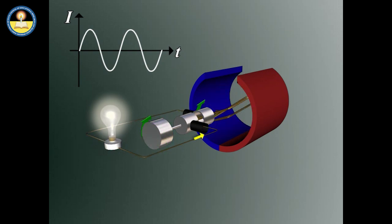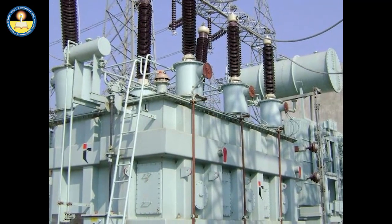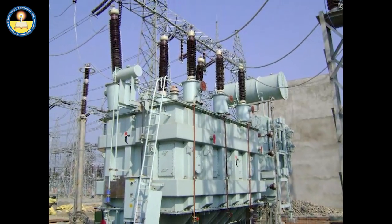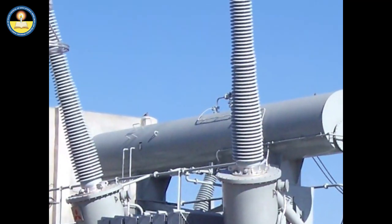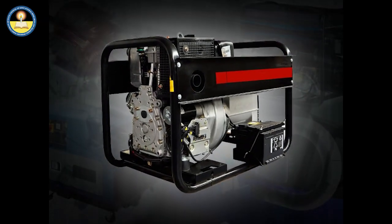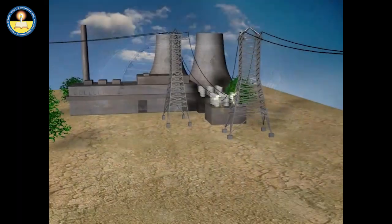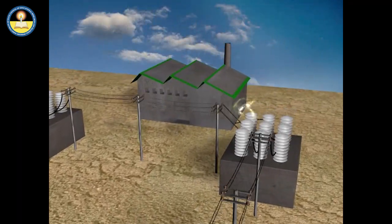Most commonly, the current changes direction 100 times per second. AC is used predominantly across the world in higher-power applications because with AC, it is possible to build electric generators, motors, and power distribution systems that are far more efficient than DC.